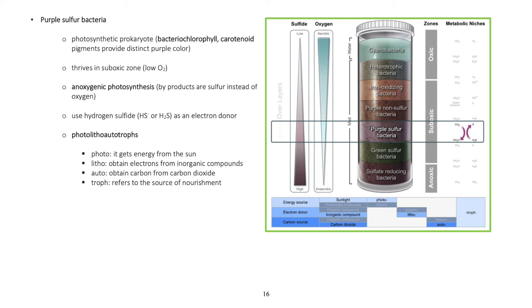Purple sulfur bacteria: Photosynthetic prokaryote with presence of bacteriochlorophyll and carotenoid pigments which provide distinct purple color. Thrives in suboxic zone with low oxygen. Anoxygenic photosynthesis - byproducts are sulfur instead of oxygen. Use hydrogen sulfide as an electron donor. Photolithoautotrophs - photo: gets energy from the sun, litho: obtain electrons from inorganic compounds, auto: obtain carbon from carbon dioxide, troph: refers to the source of nourishment.